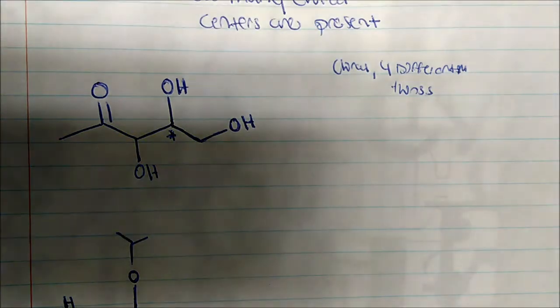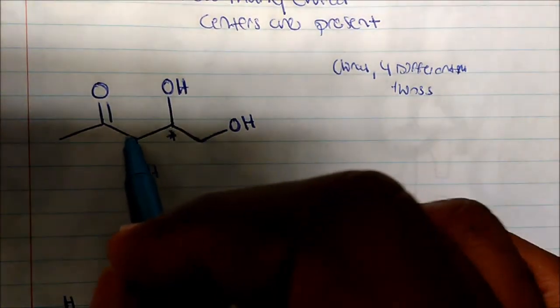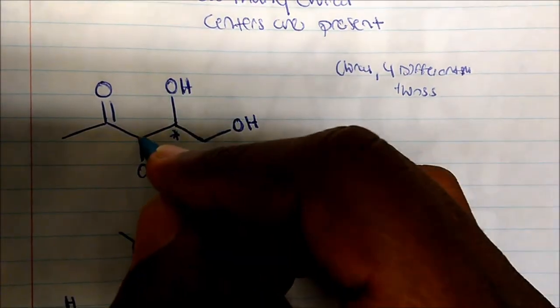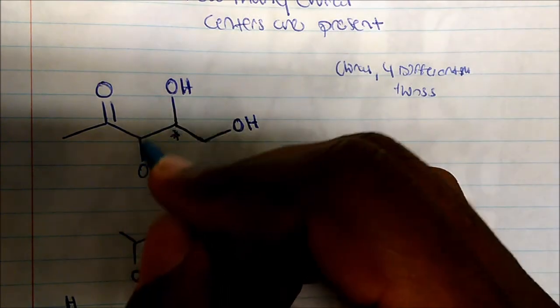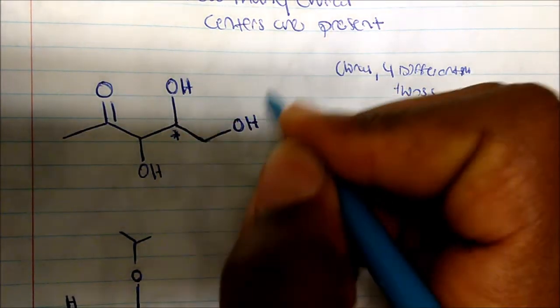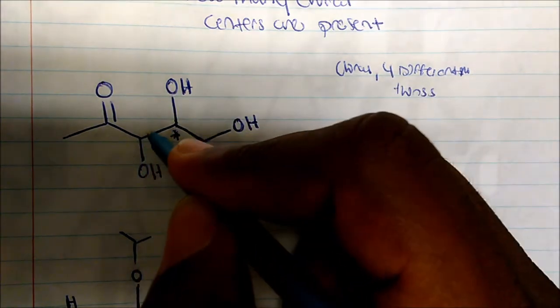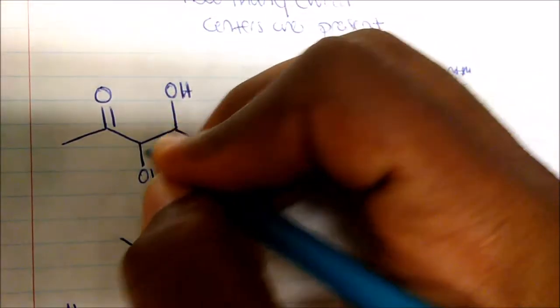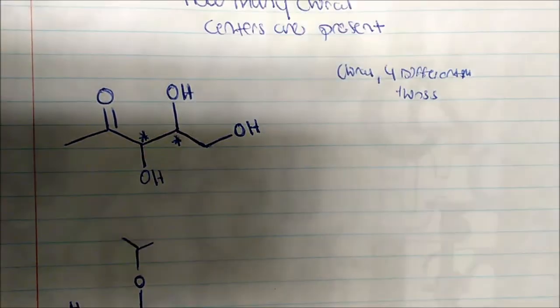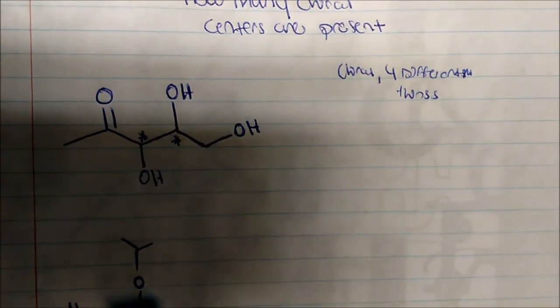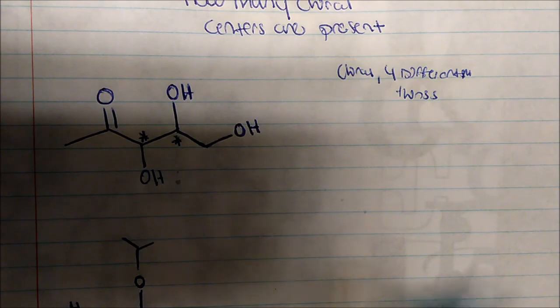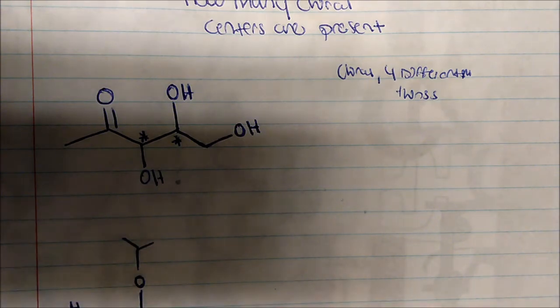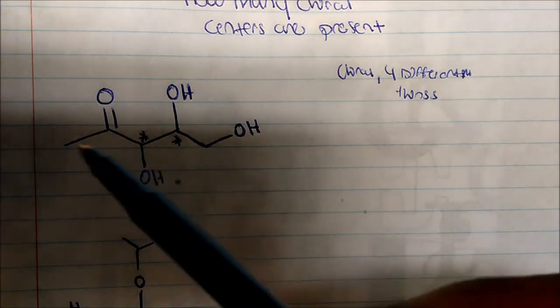So this carbon is chiral. Now this other carbon has an OH, two different larger groups bonded to it, and a hydrogen — so this is also a chiral center. We represent chiral centers with a star (*) to signify that it's a chiral center.